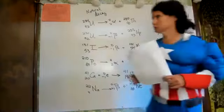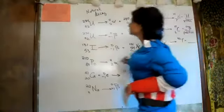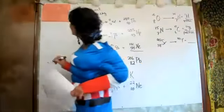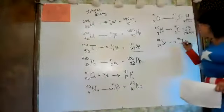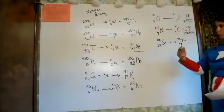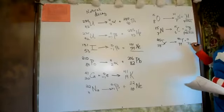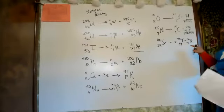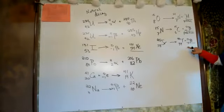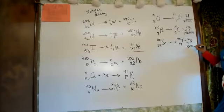Strontium is number 38 and ytterbium is right next door at 39. This is going to be beta decay. In beta decay, it always moves one up on the periodic table with no change in the mass — the atomic number changes up by one.